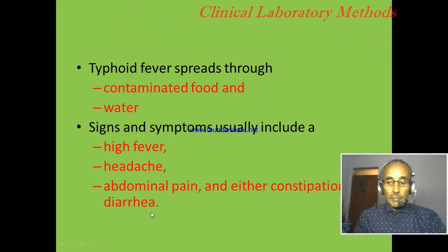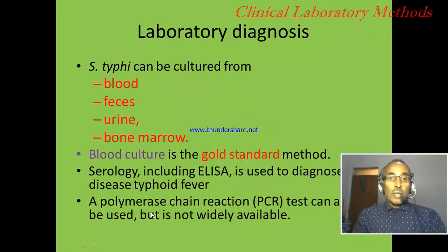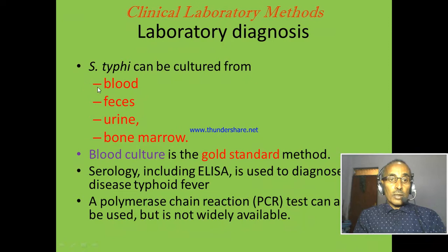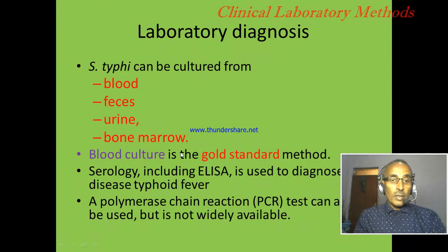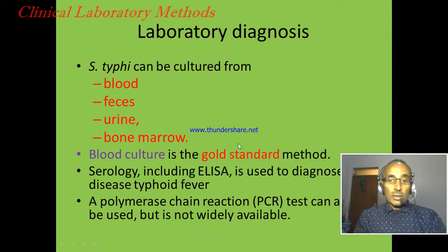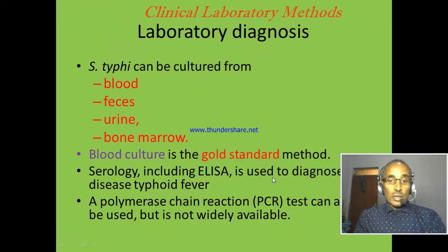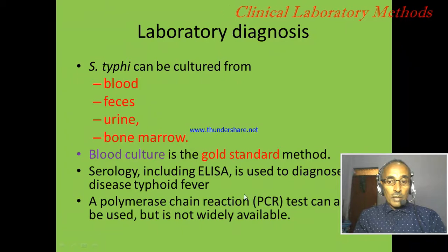For laboratory diagnosis, Salmonella typhi can be cultivated on artificial culture media by collecting samples from blood, feces, urine, and pulmonary sources. Blood culture is the gold standard method which gives true diagnosis of the disease. We can also use serological techniques including ELISA and WIDAL, and PCR if it is available.